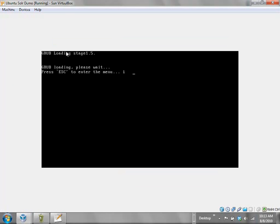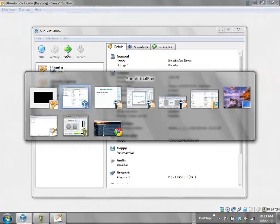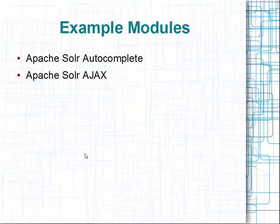There are some example modules showing how you can change how the search is performed and retrieved — Apache Solr Autocomplete and Apache Solr Ajax. You can pull these down off of Drupal.org. Autocomplete gives you, as you start typing out a search, a selection of possible things you could be searching for. Apache Solr Ajax, on the other hand, with some work telling it how your theme is set up, allows the search to update without having to do a page refresh.